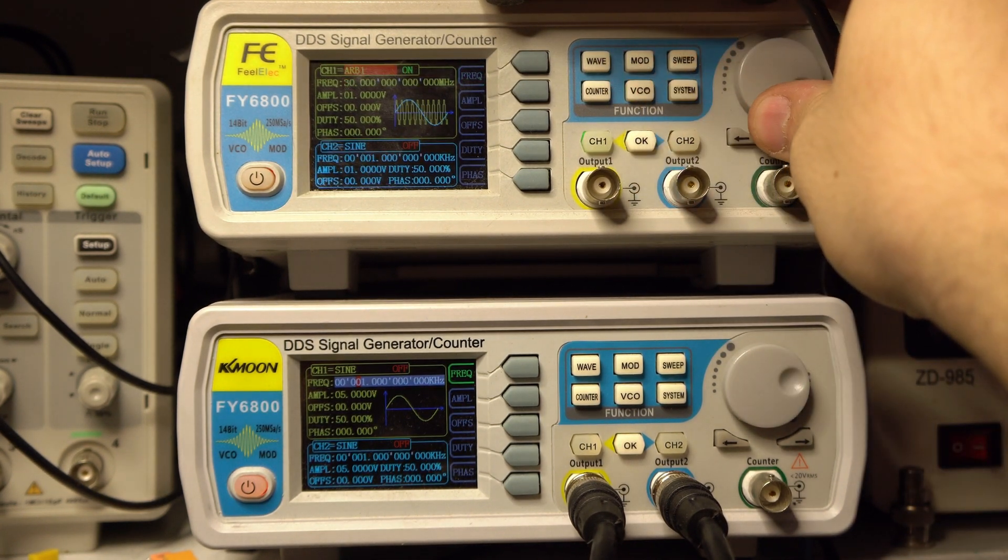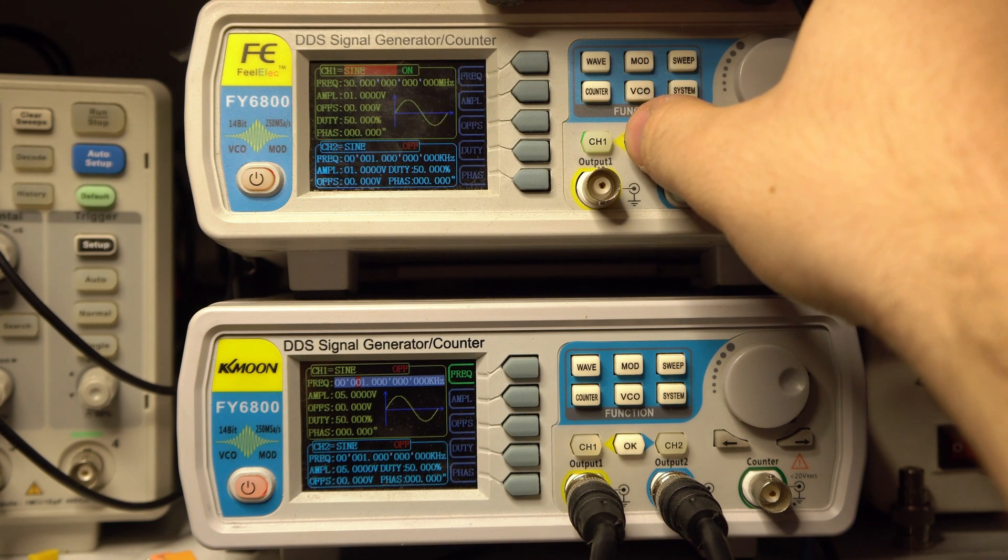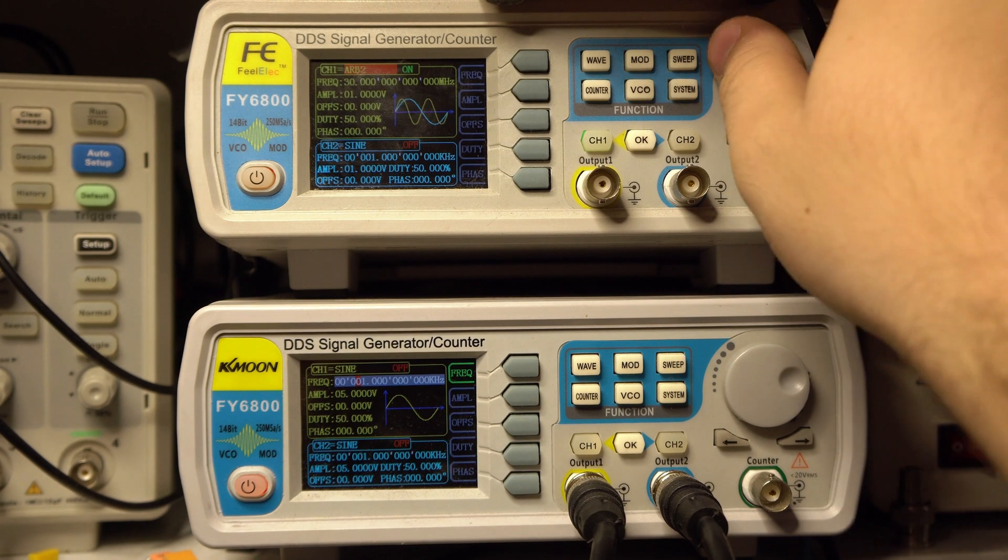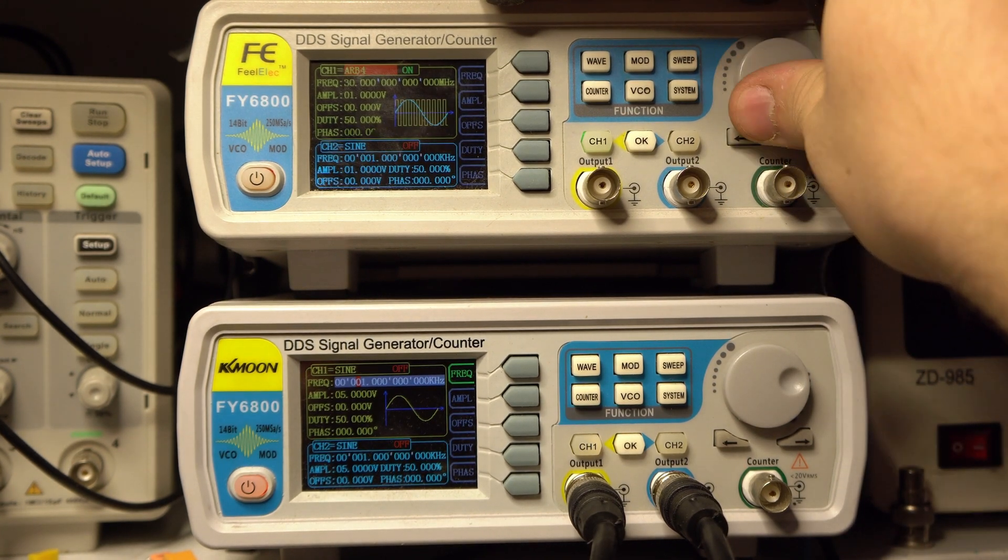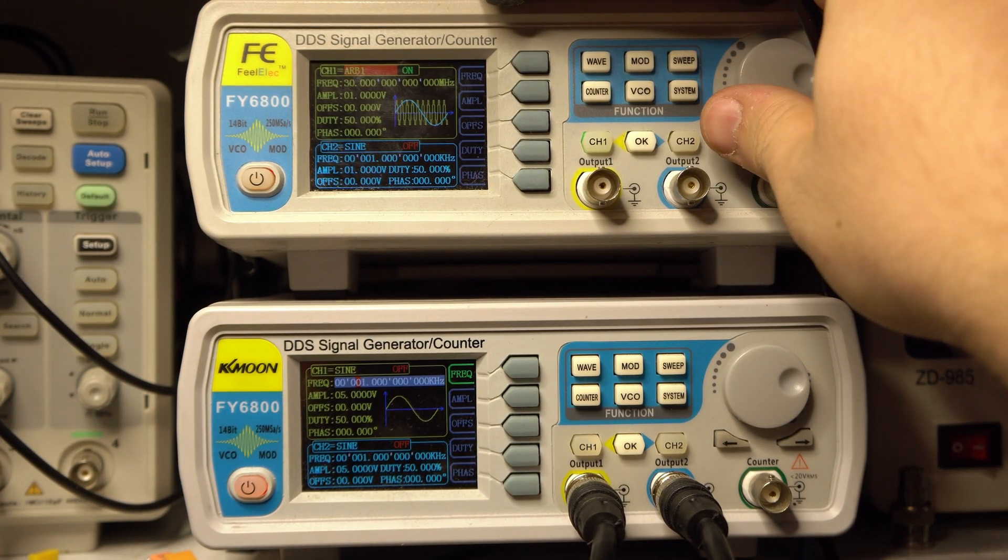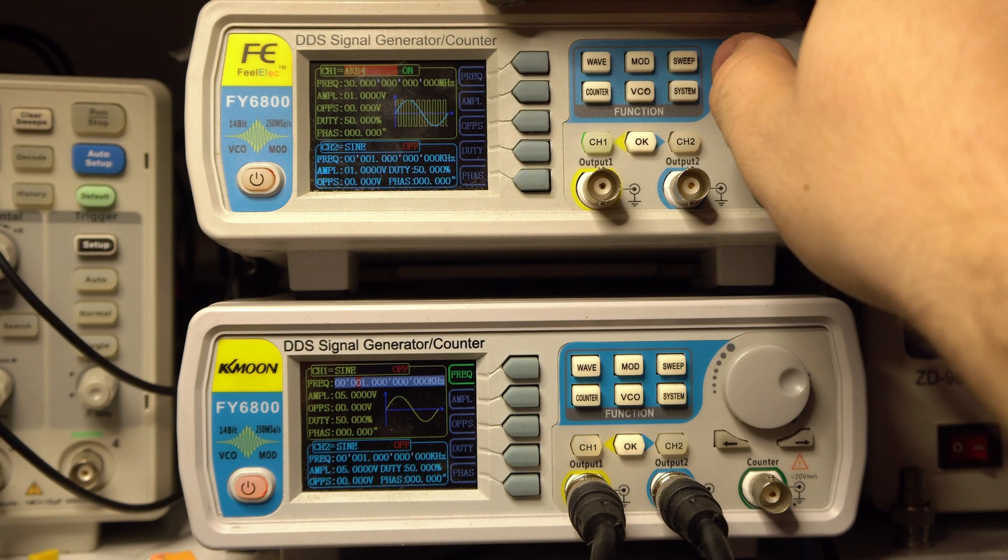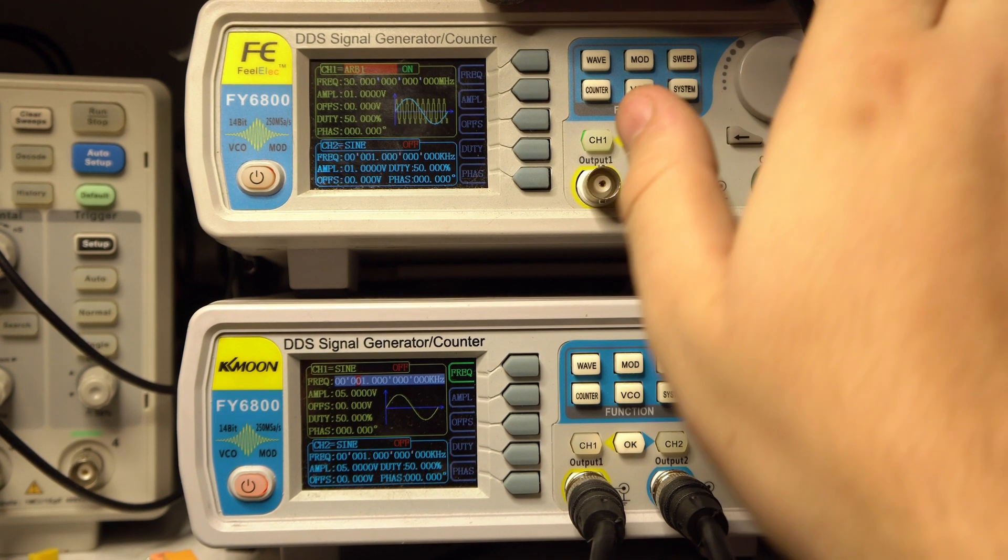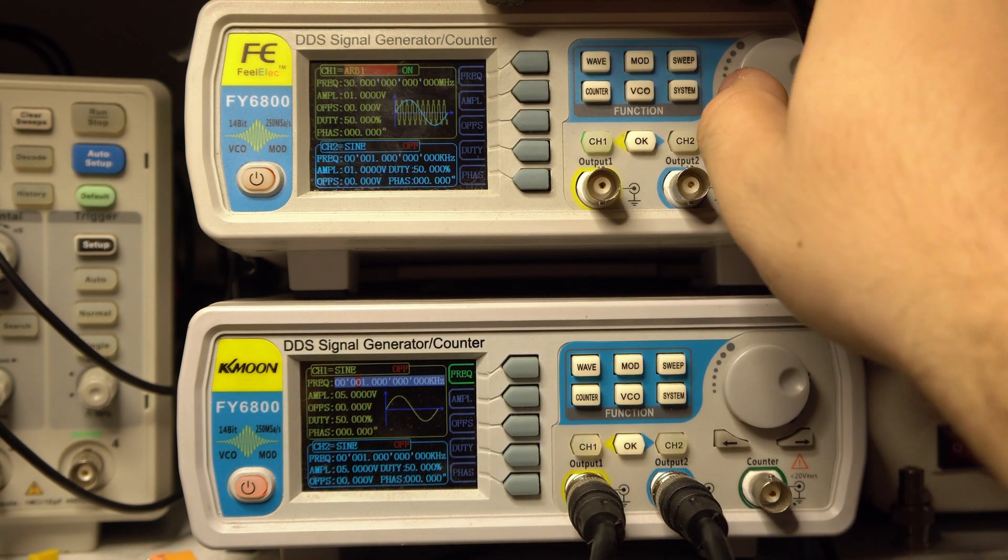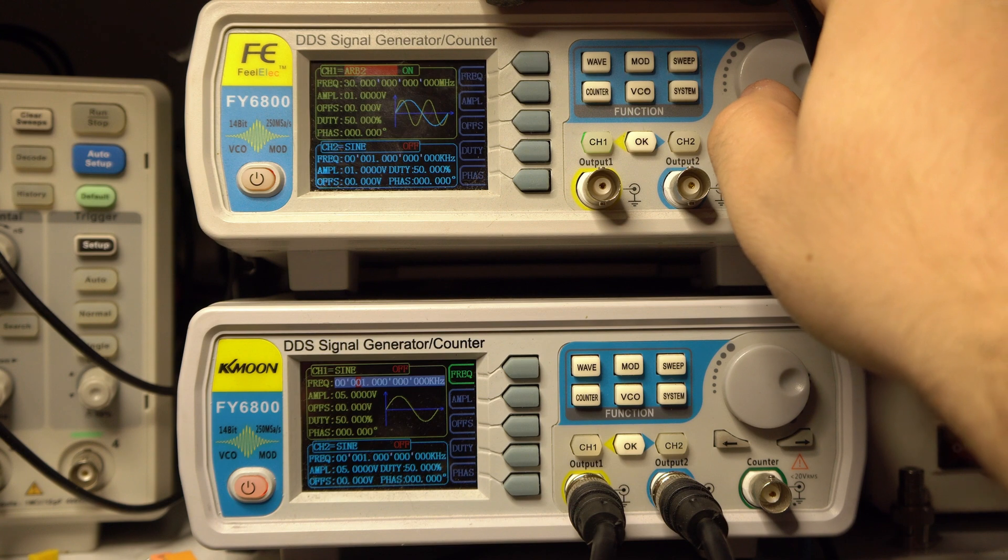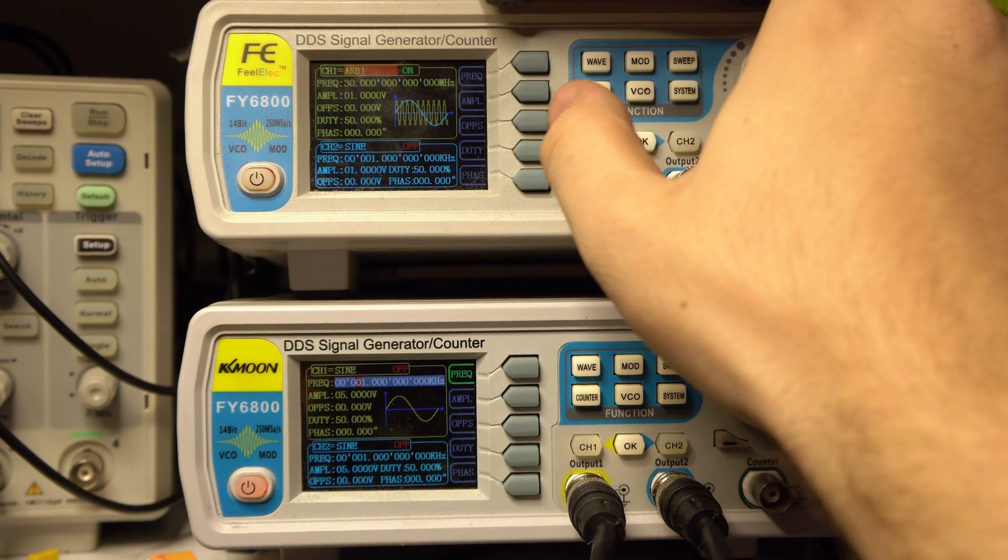When you select a channel and hit wave to change the waveform and you click OK a few times, you land at arbitrary one. You can save up to 64 arbitrary waveforms. Let's do this - I already saved some on this device like this 10 cycle sine wave and that's a 2 cycle sine wave.